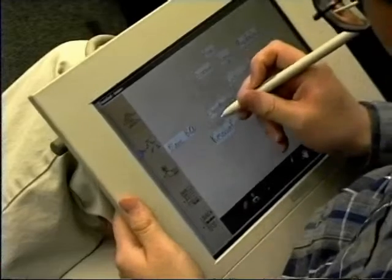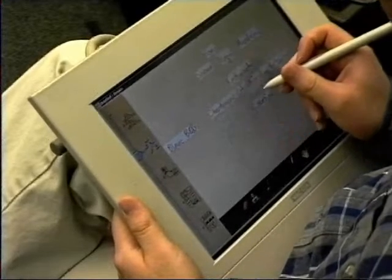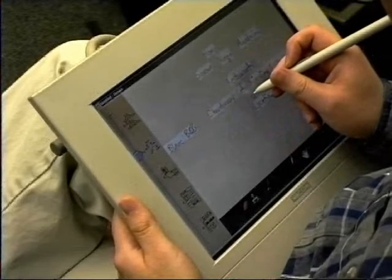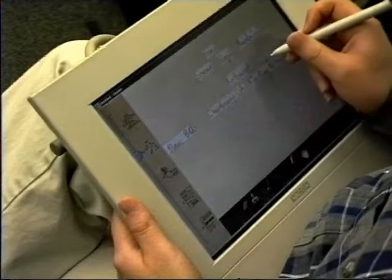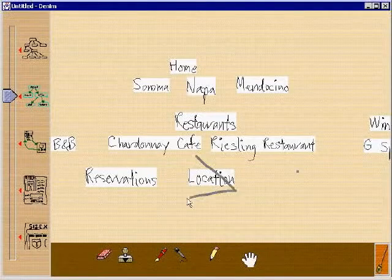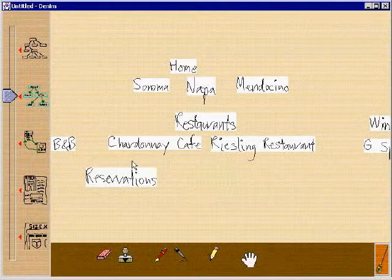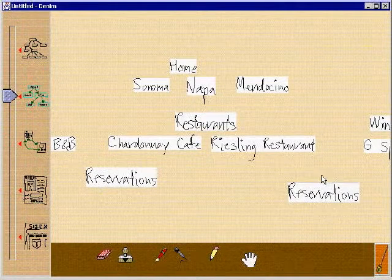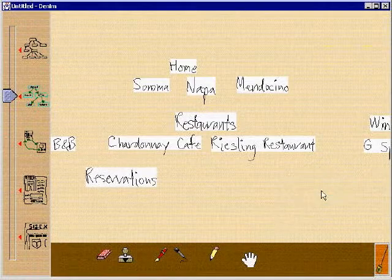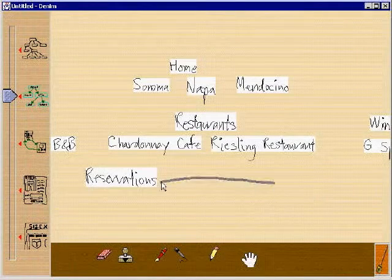Bob can also remove pages from the sitemap using a simple pen gesture. To do this, he holds down the button on the pen while drawing the gesture. Gestures are a good fit for pen-based interaction. They are fast because they allow the designer to specify a command and its operand in one stroke, without needing to access a menu or other controls.